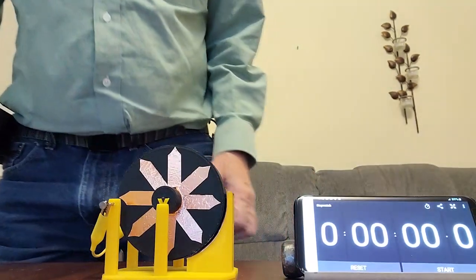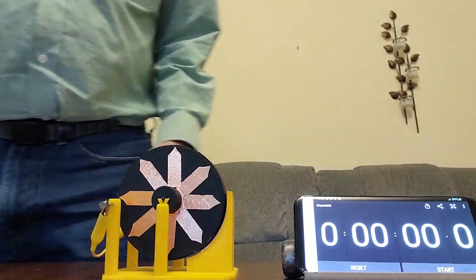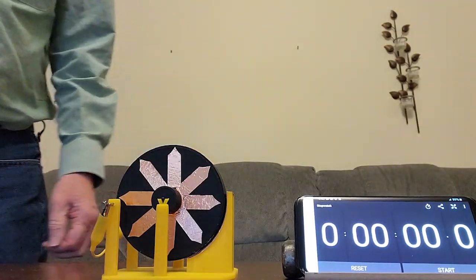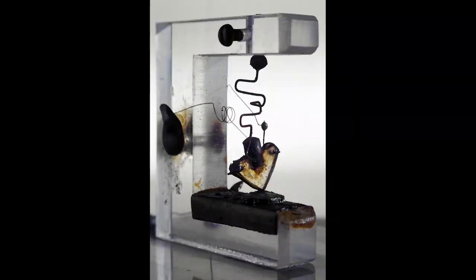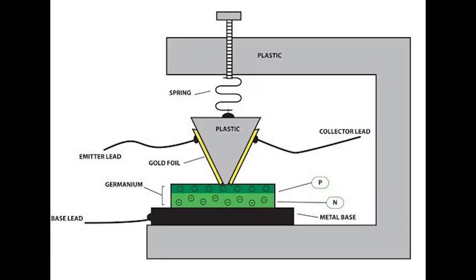I had read an article, actually several decades ago, about how the first transistor was invented. And it involved dealing with a point also. Here's a graphic of that first transistor, and you can see how it involves a point for gathering these electrons.